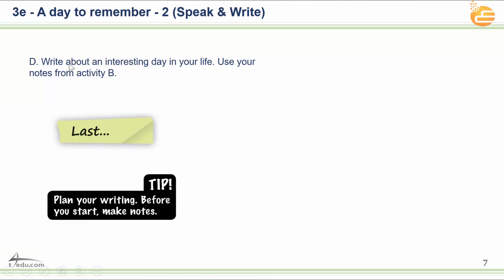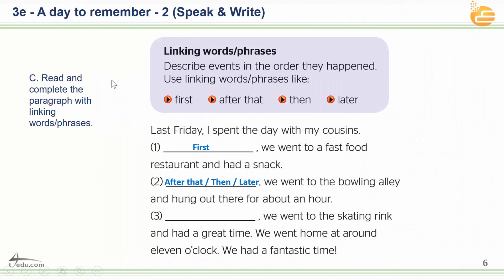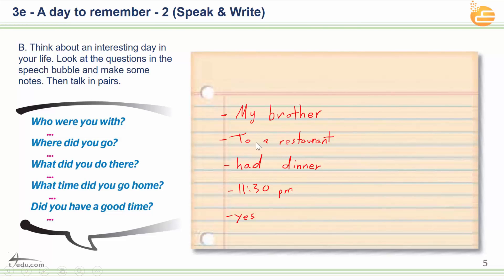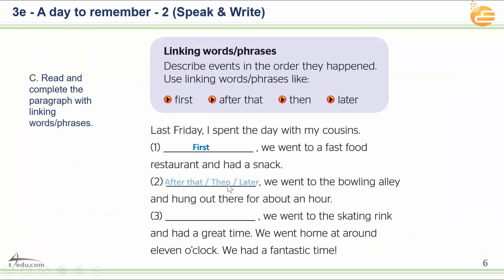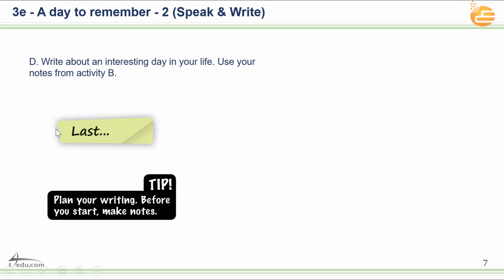Activity D: Write about an interesting day in your life. Use your notes from Activity B. Start with 'last' and the day — for example, 'last Saturday,' 'last Monday,' 'last Friday.' Plan your writing before you start by making notes, just like we did in Activity B. After the lesson, I want you to make your own notes and then write a small paragraph.